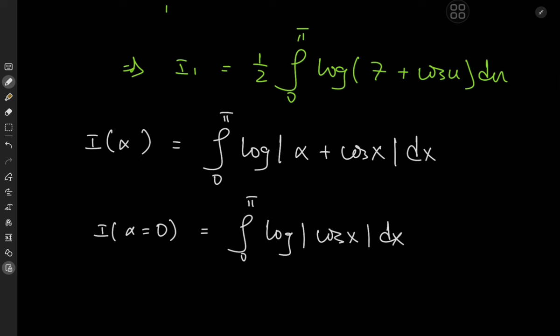So I₁ equals one half of I(7), which is (1/2)(π·cosh⁻¹(7) minus π log 2), giving π/2 times (cosh⁻¹(7) minus log 2). The target integral was π/2 log 2 plus I₁, so substituting in and cancelling the log 2 terms, the target integral sorts out quite nicely to π/2 times cosh⁻¹(7), which is a really elegant closed form.